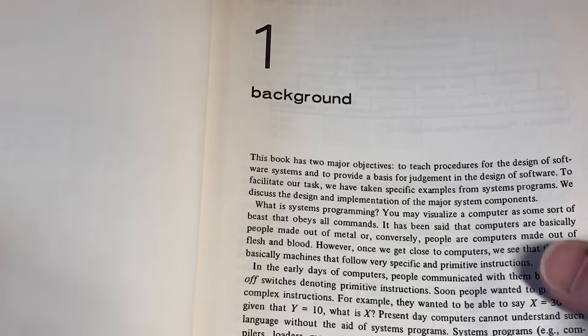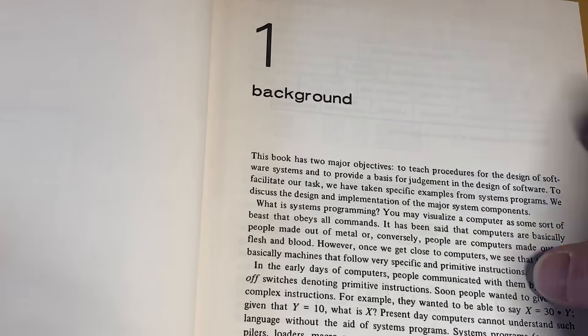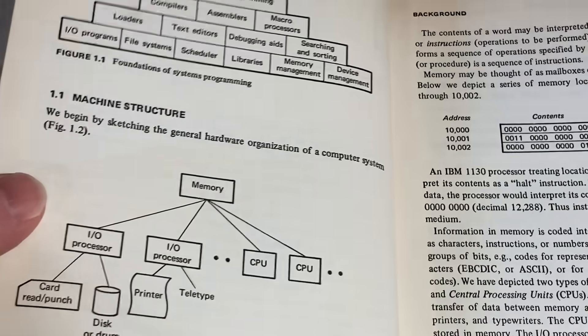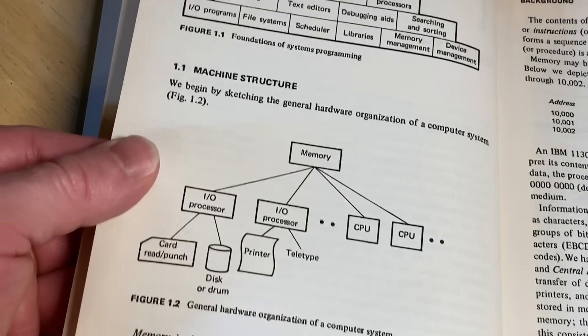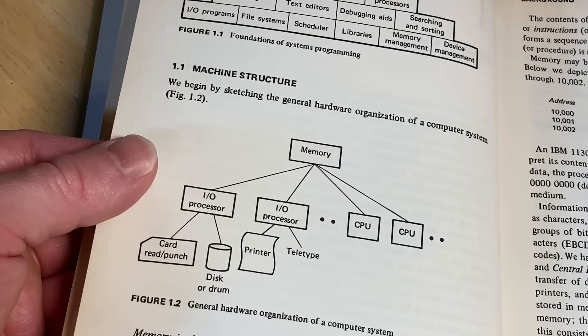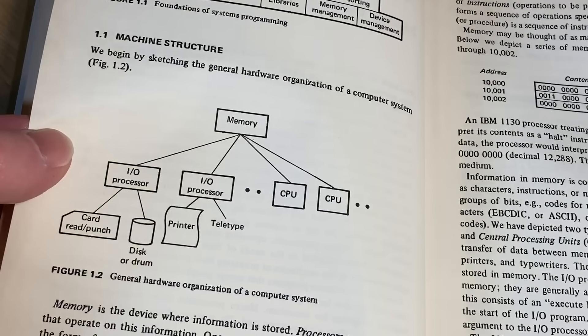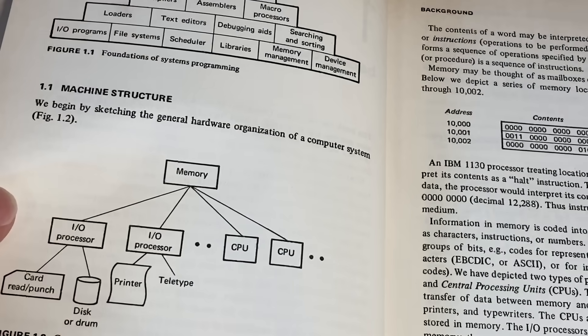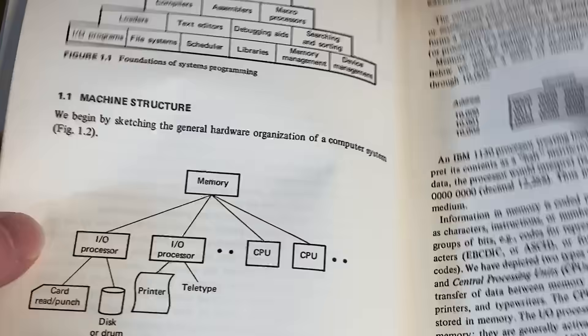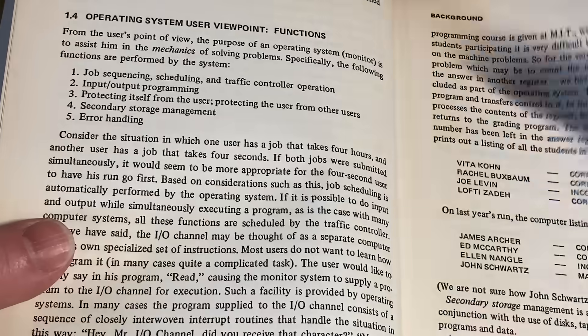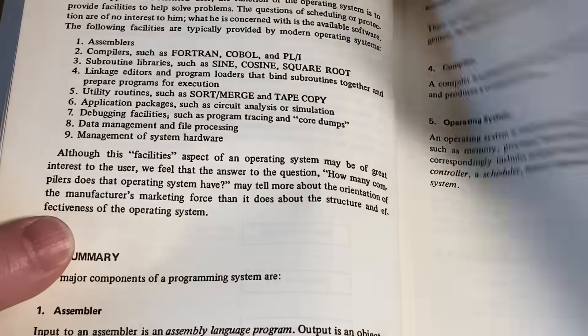Here's some more background — talks about the objectives, and it just gives you an overview of things, which is kind of cool. Machine structure, input/output processor, CPU, printer — just an idea of how things work, which is pretty cool.